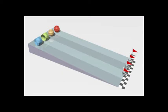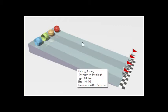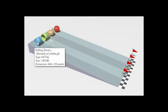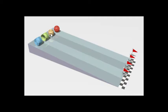First of all let us understand what is rolling motion. Before understanding the concept of rolling motion let us try to perform one experiment. Here we will see one inclined surface. From the same height we are going to release four objects: the first object is a solid cylinder, second object is a hollow cylinder, third one is a solid sphere, and fourth one is a hollow sphere.